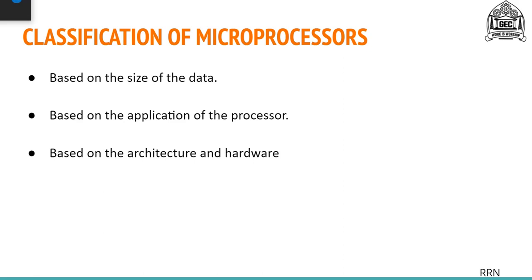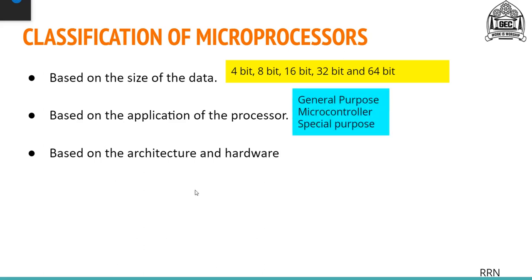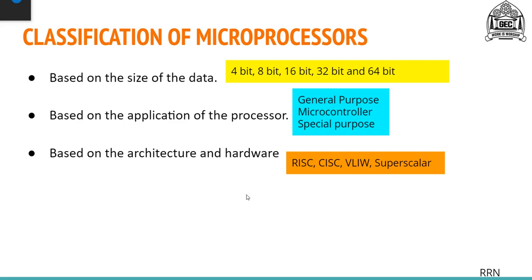So these are the three classifications of microprocessors. First, based on size of data: 4-bit, 8-bit, 16-bit, 32-bit, and 64-bit. Second, based on application: general purpose, microcontroller — everything on a single chip including memory and ports — and special purpose, which targets only specific functions. Third, based on architecture and hardware: RISC, CISC, VLIW, and superscalar.